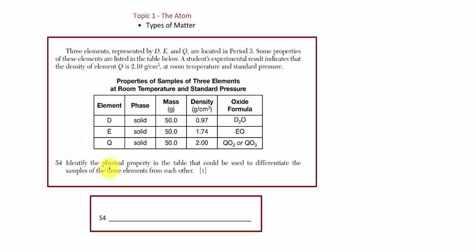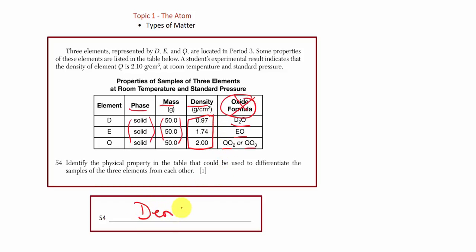Question 54: Identify the physical property in the table that could be used to differentiate the samples of D, E, and Q. We eliminate the oxide formula column since that's a chemical property, not a physical property. The three physical properties are phase, mass, and density. They're all in the same phase and have the same mass, but they all differ in density. The one-word answer is simply: density.